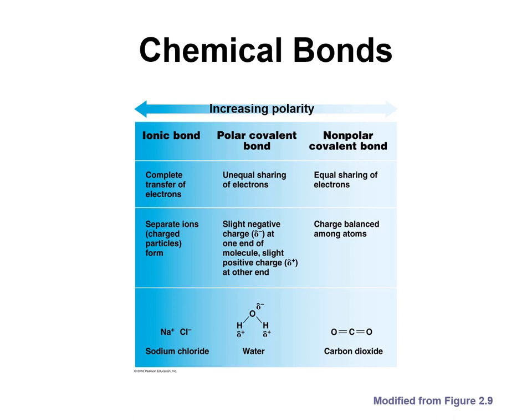Different molecules exhibit different degrees of polarity depending on the types of bonds that make them up. Very low polarity occurs where we have predominantly or exclusively nonpolar covalent bonds. Greater separation of charge results from polar covalent bonds. The greatest separation of charge or polarity occurs in molecules formed by ionic bonding.